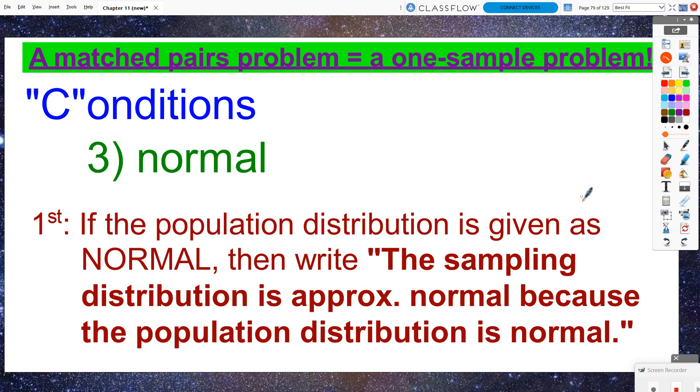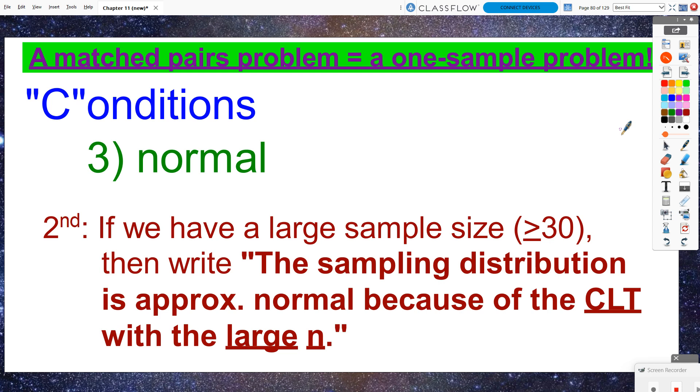Now the normal condition. We've got three situations that could be happening here. Is the population distribution normal? If it is, then we get to write that the sampling distribution is approximately normal because the population distribution is normal. Or if that doesn't work out, if we have a big enough sample size, we could try to use central limit theorem and state the sampling distribution is approximately normal because of the CLT with our large sample size.